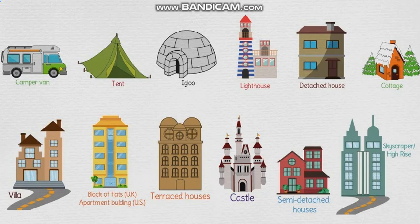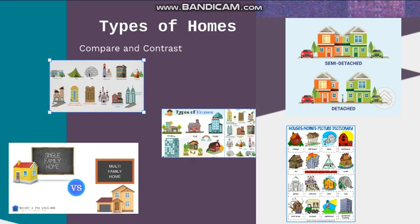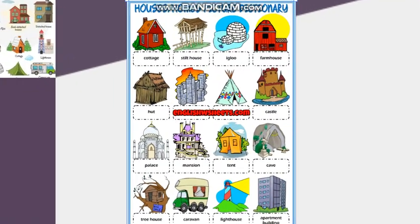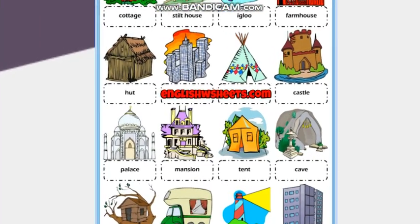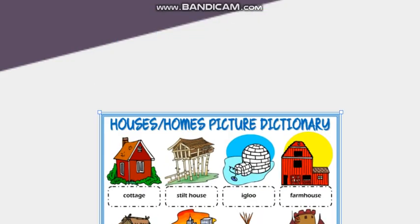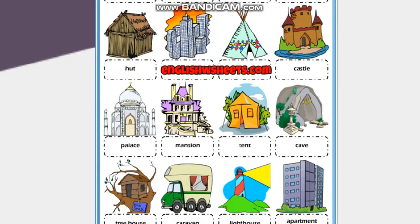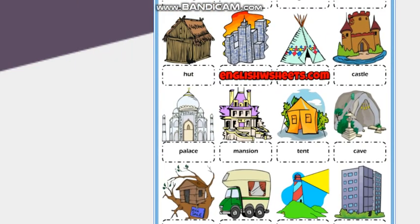We're going to discuss all of these houses in our class. Let's look at this picture and see if we haven't mentioned any of the houses around the world. We can see a cottage, a stilt house, an igloo as I said before, a farmhouse, and a hut.